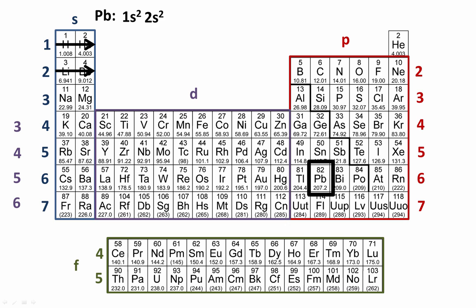After beryllium, we go to boron, and boron begins to fill the 2p subshell. To completely fill a p subshell requires 6 electrons because there are 6 columns in the p block.